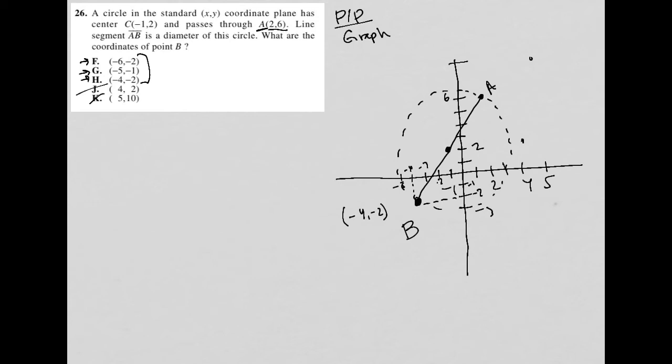But if I want to put some actual math in here, because F, G, and H are all clustered around the same general area, well, what do I know? I know that the center is at (-1, 2), and I know that it passes through (2, 6), which means I can find a slope.